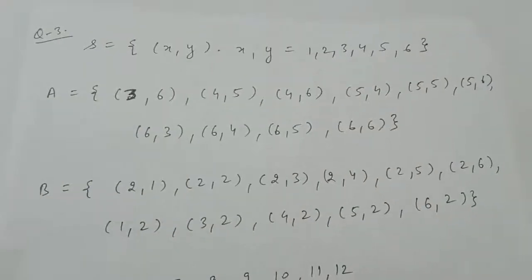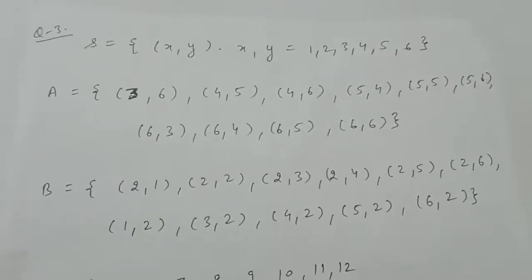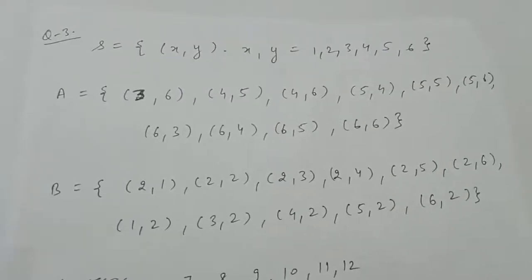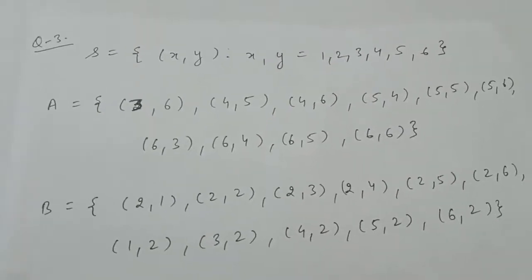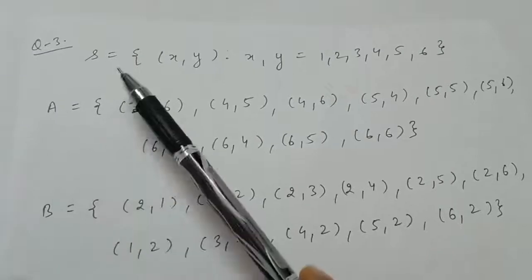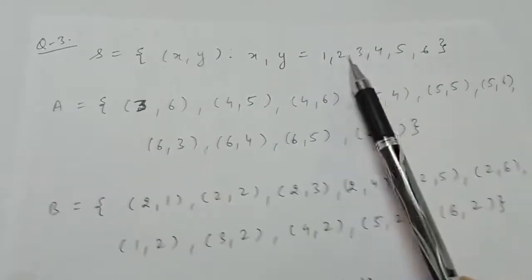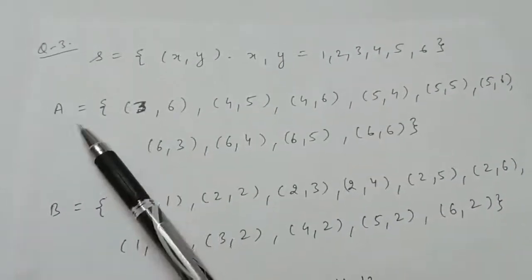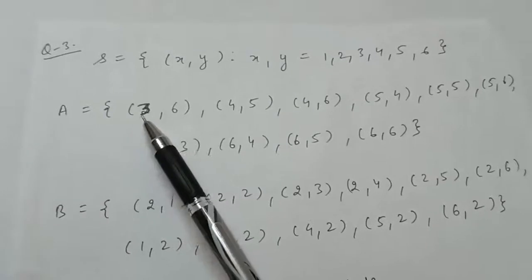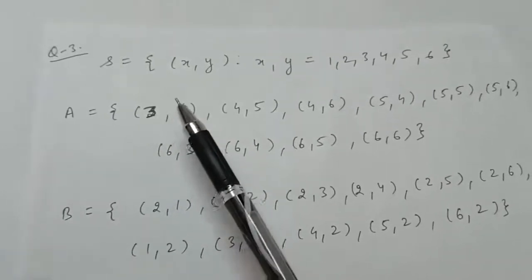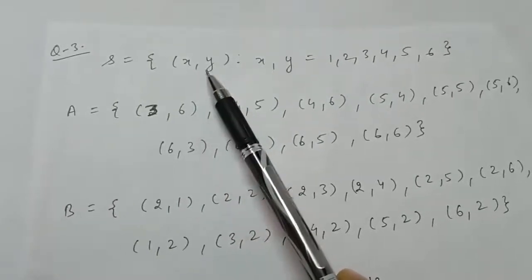Question 3: an experiment involves rolling a pair of dice and recording the numbers that come up. The sample space will be ordered pairs (x, y) where x and y can be any of the 6 numbers. Event A is to find ordered pairs where the sum is greater than 8, so the sum can be 9, 10, 11, or 12, since the maximum sum is 6+6=12.